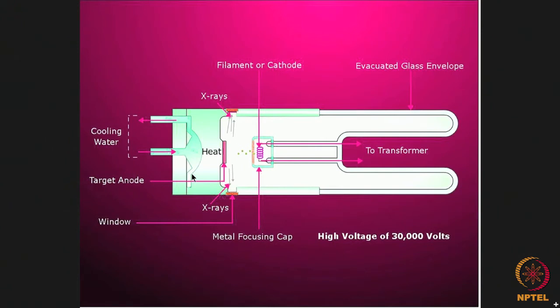The voltage applied can be 30,000 volt, can be less, can be even higher. Depending on what is the accelerating voltage used, we can control the amount and intensity of x radiation which is produced.